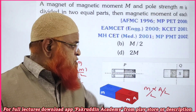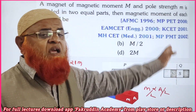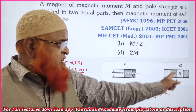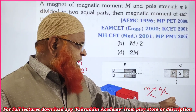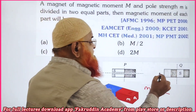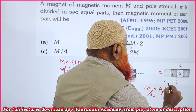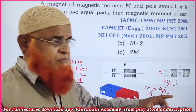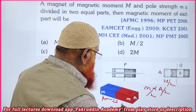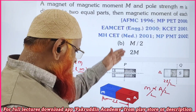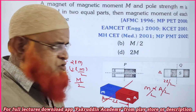Now what happens when you cut the magnet into two pieces vertically along the equatorial line? When you cut the magnet along the equatorial line, the area of cross section is not going to change. What changes is the length of the magnet — it becomes half. The magnetic length, taken as 2l, becomes 2l/2 when cut in this direction.